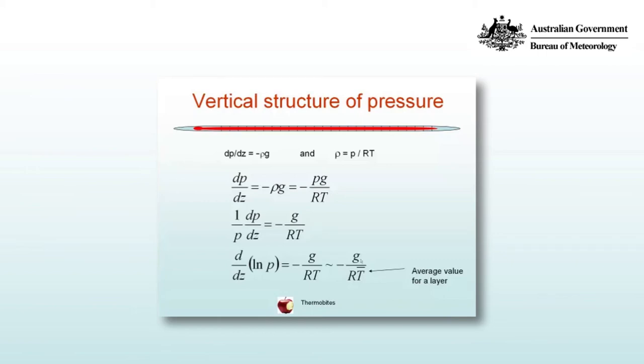We can't automatically do that for the right hand side because in general the temperature will be a function of height. So we'll make an assumption here. We can have some kind of average value for a layer of atmosphere for the temperature, and we'll call it t bar. So the right hand side might be written as approximately equal to minus g over RT bar. Now we can integrate with respect to height both sides.